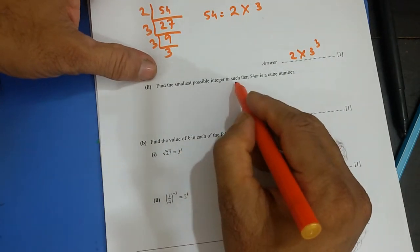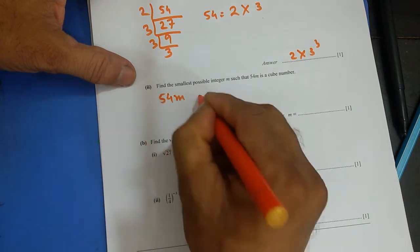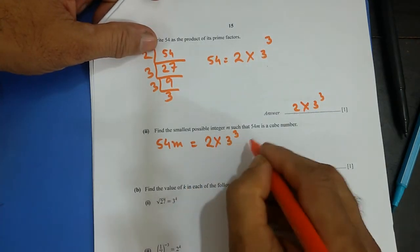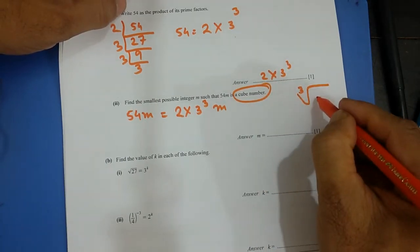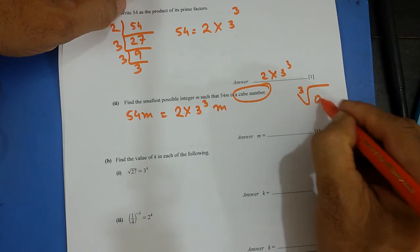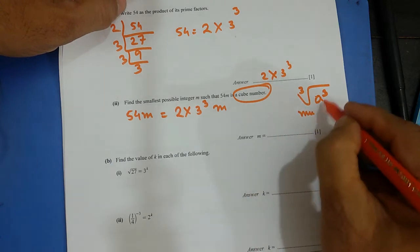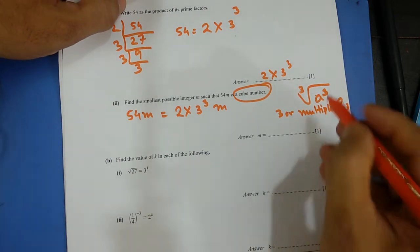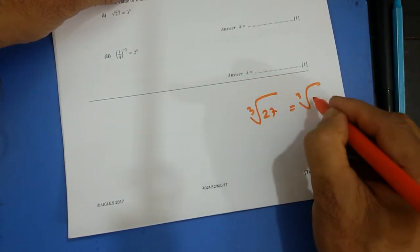Find the smallest possible integer m such that 54m is a cube number. So 54m — I can write 54 as 2 times 3 to the power 3, and then of course I have m. For a cube number, whatever the base is, its power has to be a multiple of 3. For example, cube root of 27 can be written as 3 cubed.